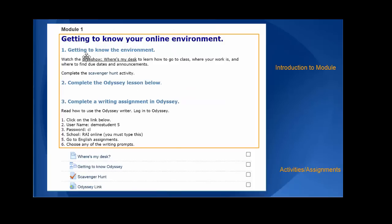In Module 1, you're doing this activity right now, Getting to Know the Environment, where you're watching your slideshow to learn how to go to class. Inside of a module, you'll have activities. You'll have an introduction and then activities, such as Where's My Desk? Getting to Know Odyssey. We'll learn more about that in a minute. The scavenger hunt and the Odyssey link. So, the first box is kind of your introduction, and the second half are your activities.